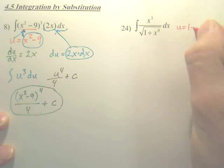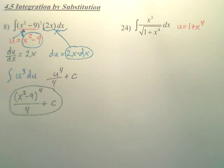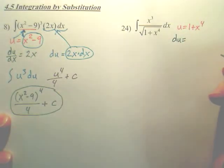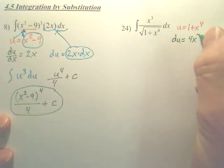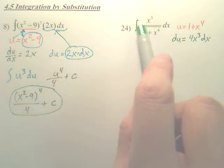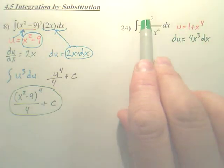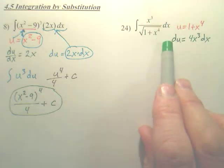So if I make u equal 1 plus x to the fourth, when I derive that, what do you get? I'm going to make it a differential right off the bat. Won't it be 4x to the third? Now does this match that x to the third? That's 4x to the third dx. I want x to the third dx, right?